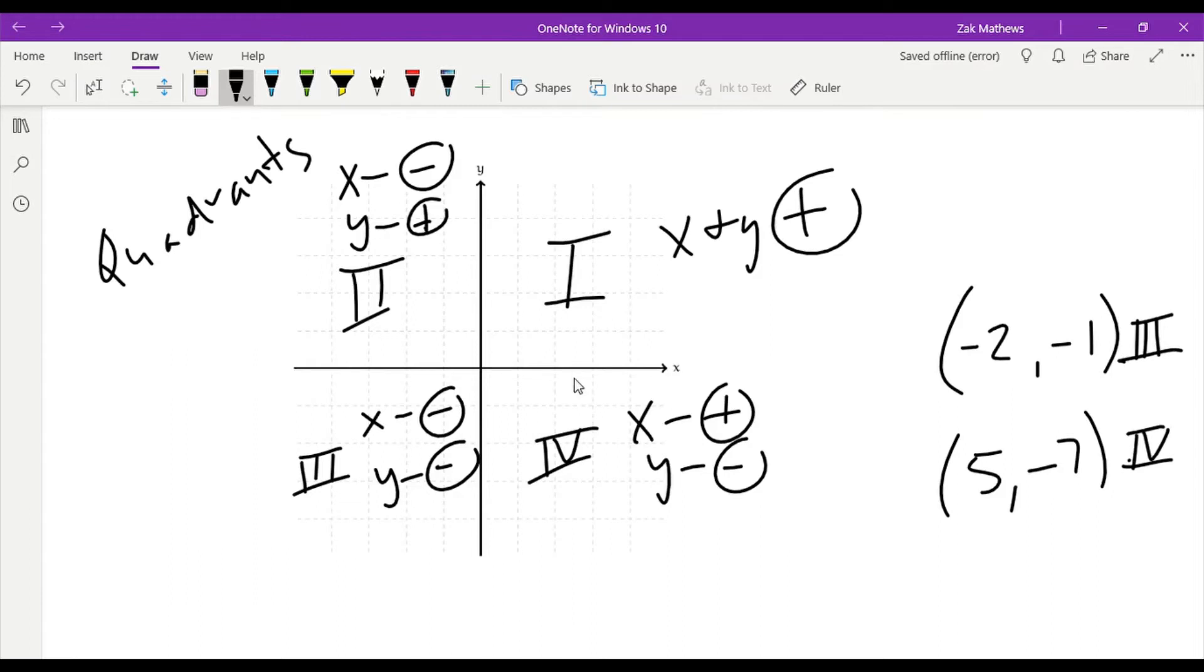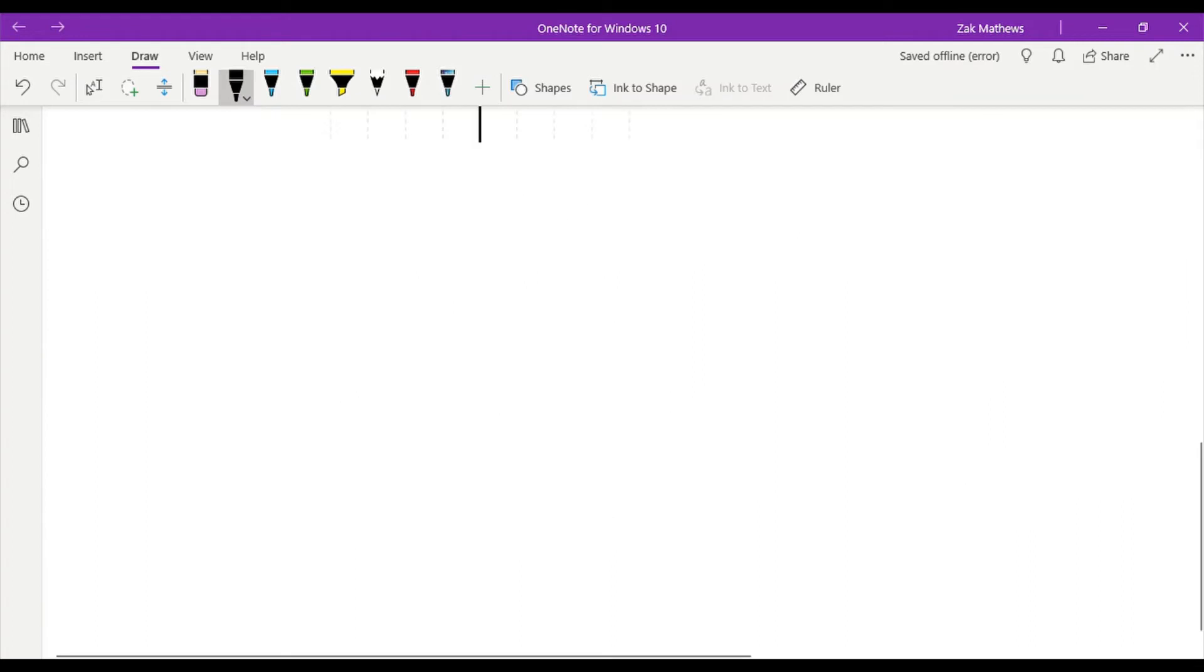Let's take a look at some examples of graphing equations. Let's say we have the equation y is equal to 2x minus 1. As we go through this course, we're going to understand better and better how to graph these things, so we're not going to have to do this every single time. But anytime we come to a new function, I want to turn this equation into a set of x's and y's.